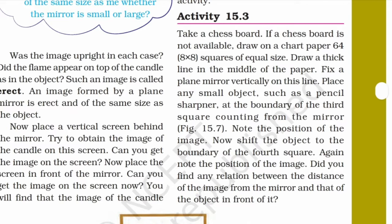Now place a vertical screen in front of the mirror. Can you get the image on the screen? You cannot obtain the image on the screen in either case. We have no image on the screen — this means the image formed by a plane mirror cannot be caught on a screen.